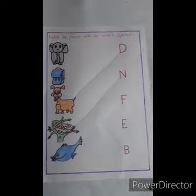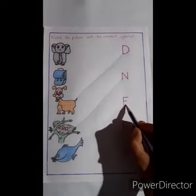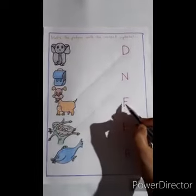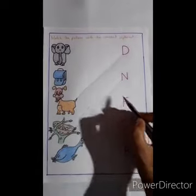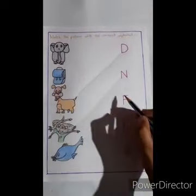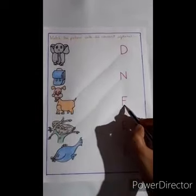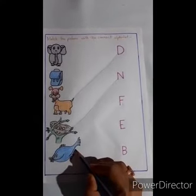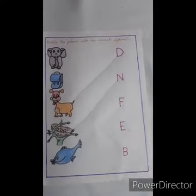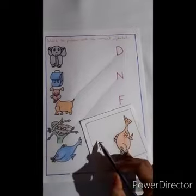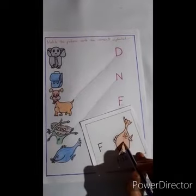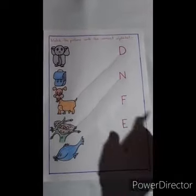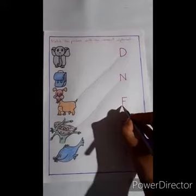Now. F for elephant? No. F for bag? No. F for fish? Yes, right! It's F for fish. So, draw a line.